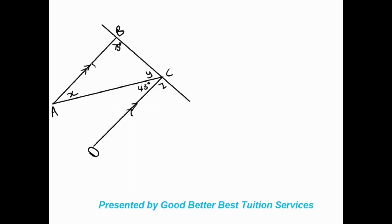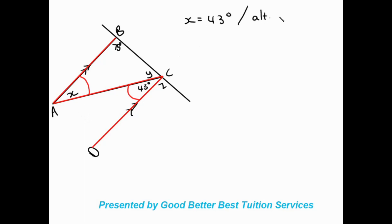What I can see is that we have a nice Z forming — a backward Z, but a Z nonetheless — and it forms with parallel lines. This tells me that this angle is equal to the angle x. So I'm going to say x is equal to 43 degrees, and our reasoning is that these are alternate angles.